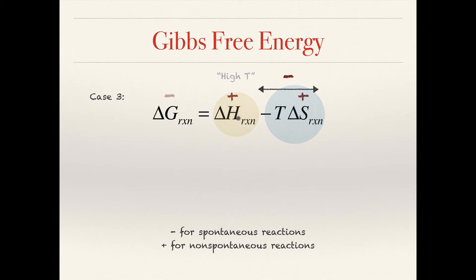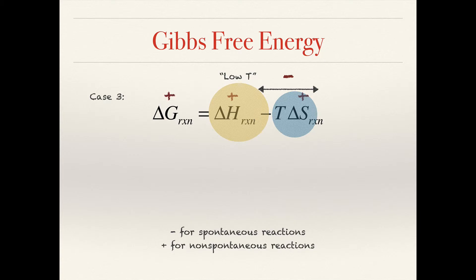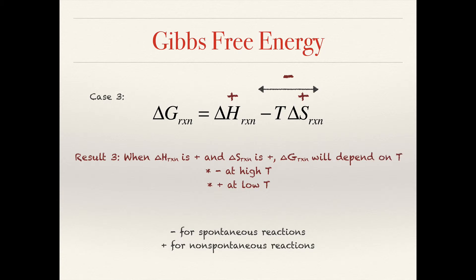Conversely, at low temperature, the ΔH term takes on greater importance and dominates the TΔS term. In that case, ΔG would be positive because ΔH wins. So if ΔH and ΔS are both positive, the Gibbs free energy is negative — meaning spontaneous — at high temperature, and positive — meaning non-spontaneous — at low temperature. When the signs are the same, temperature plays the deciding role.